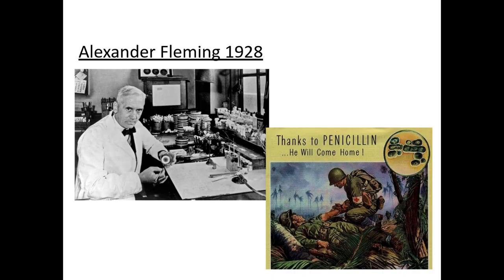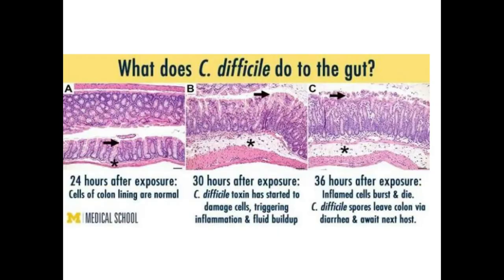Antibiotics are fantastic for saving lives against bacterial infections, however there are negative side effects. One specific example you need to know is C. diff. This is a natural bacteria found in your gut — it's always there and usually doesn't cause problems. Think of it simply: C. diff is the bad bacteria, but you also have good bacteria in your gut. Normally, the good bacteria outcompetes the bad bacteria, keeping C. diff under control by competing for nutrients, food, and space.